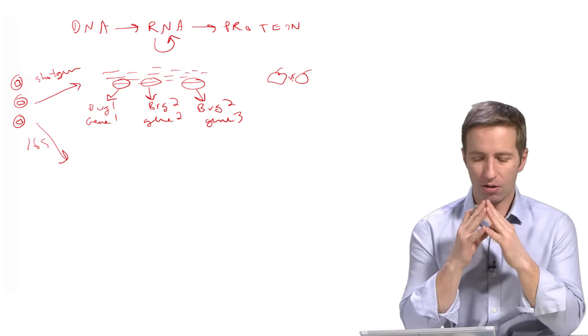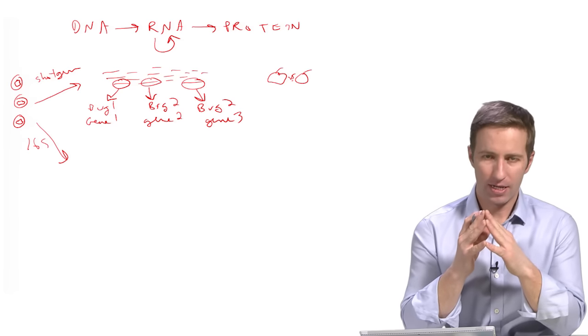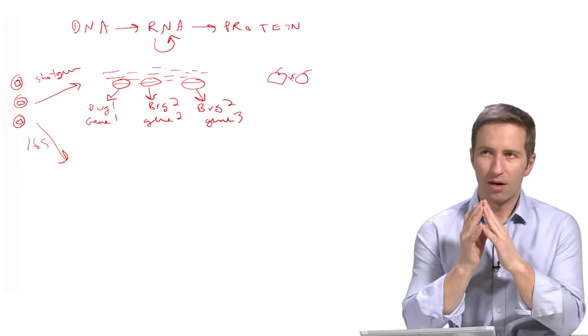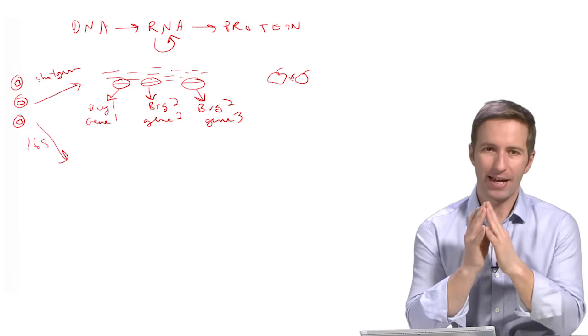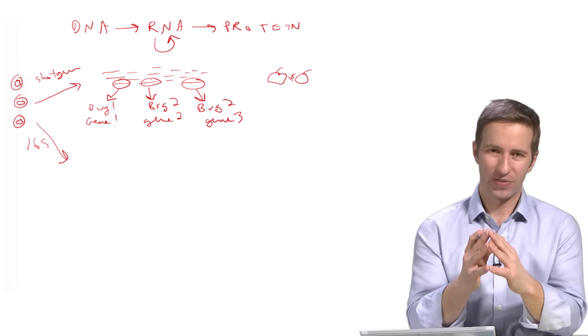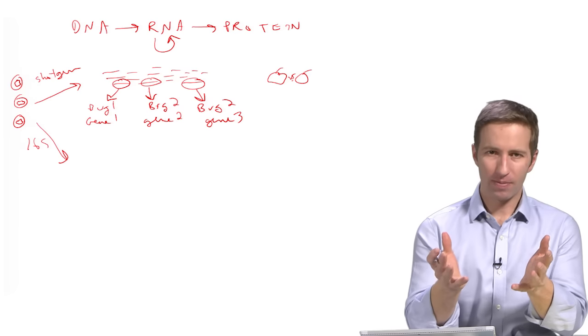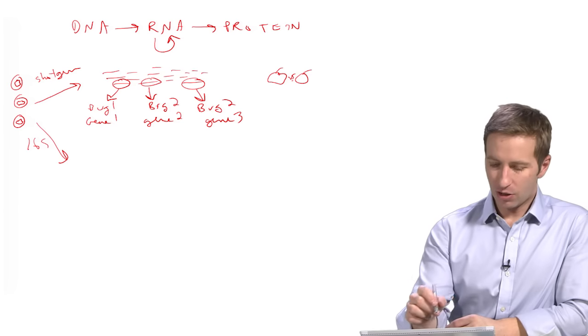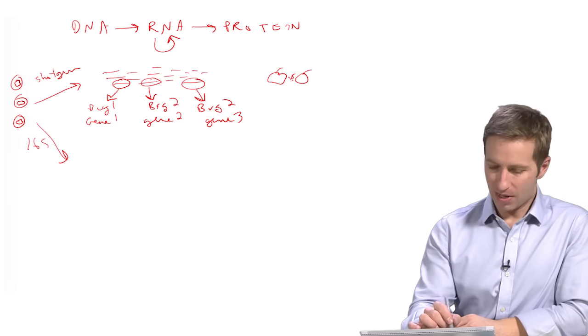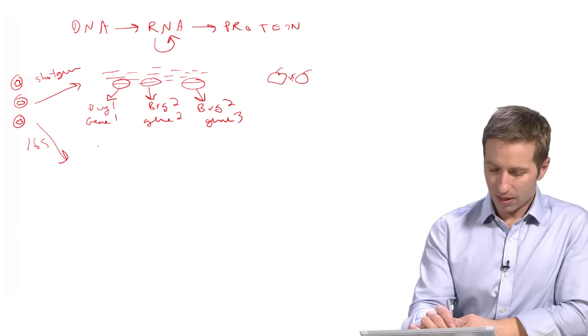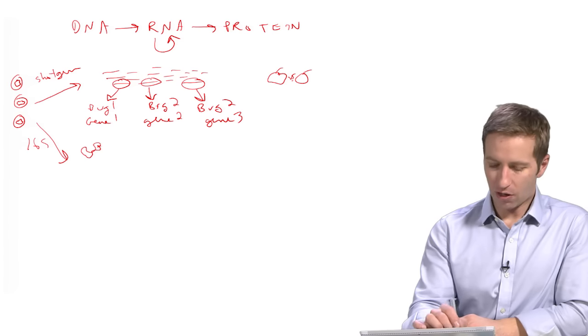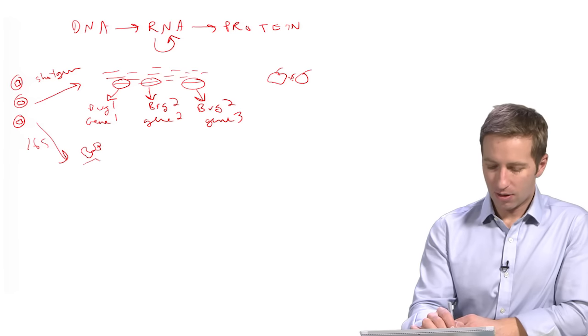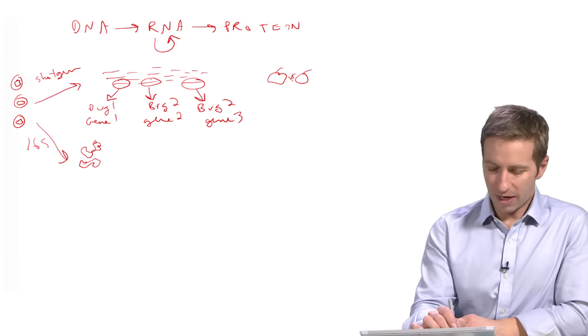Now what Carl Woese was thinking about when he came up with this approach was okay, what's something that every bug has, in fact everyone has? Everybody needs to have a ribosome. So the ribosome is basically just this blob that's made up of a couple of long strands of RNA and then those strands of RNA are decorated by lots of smaller proteins, a few dozen proteins.